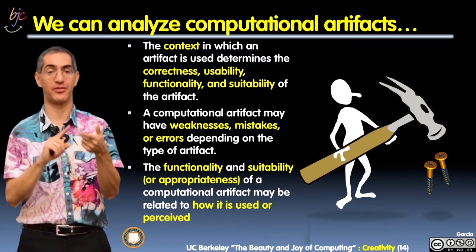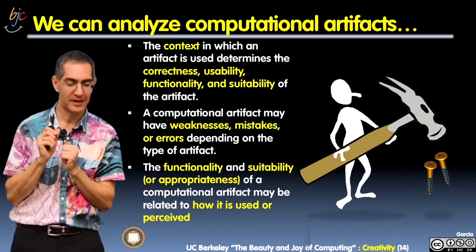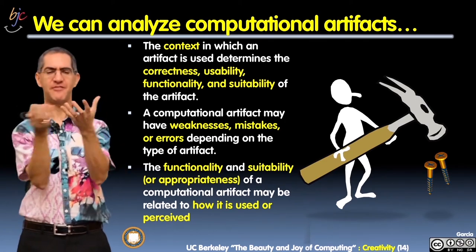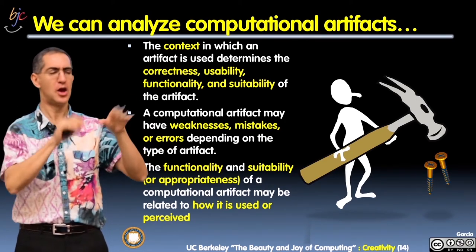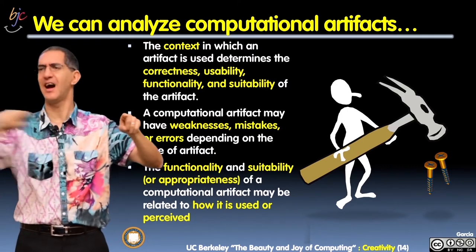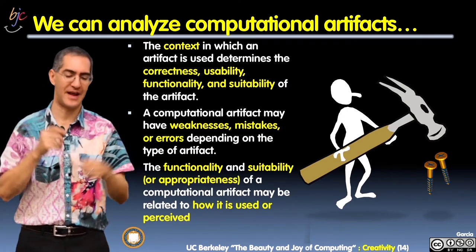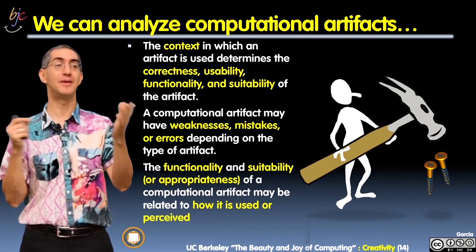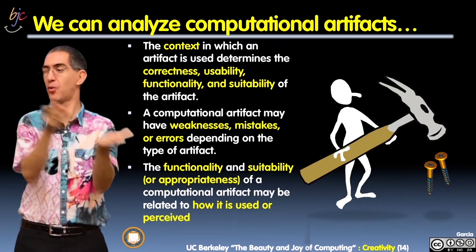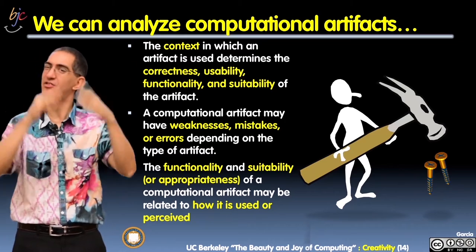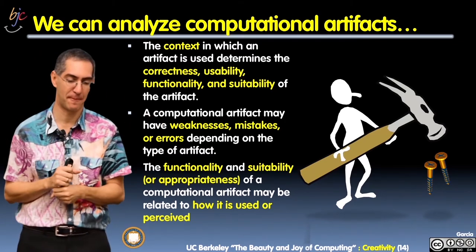You can look at a computational artifact with correctness — does it solve the problem? Is it useful? Usability: this piece of software is really hard to use; you have to put in all these arguments, it's too hard to find. Usability has a lot of different angles. And suitability: does it actually work for the task you're going to use it for? This depends on the particular artifact you're thinking about.